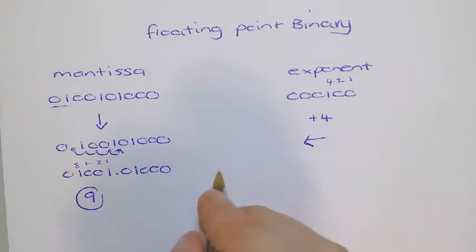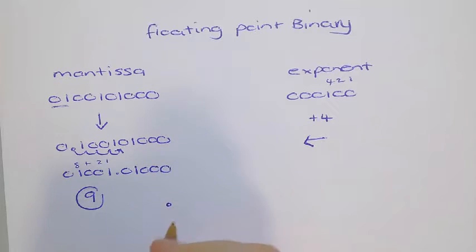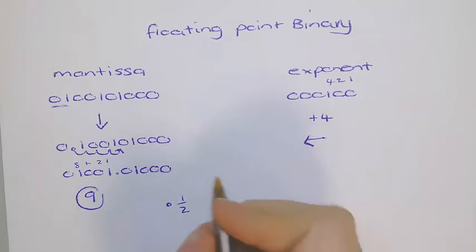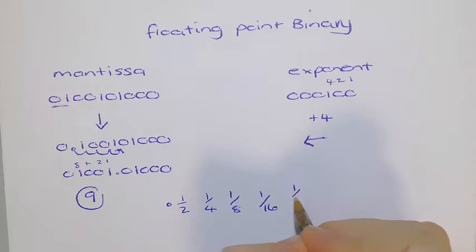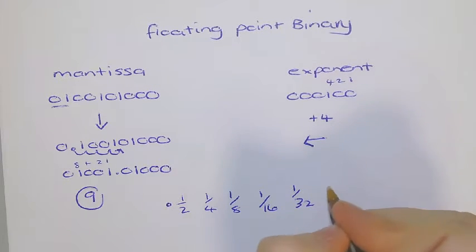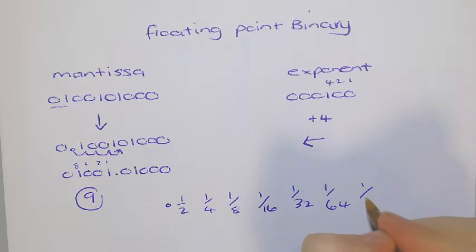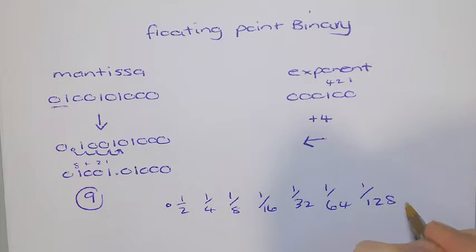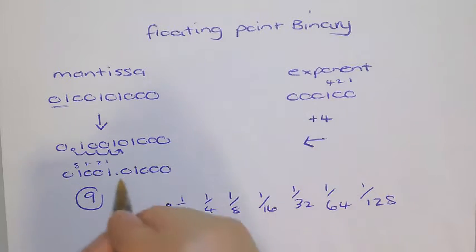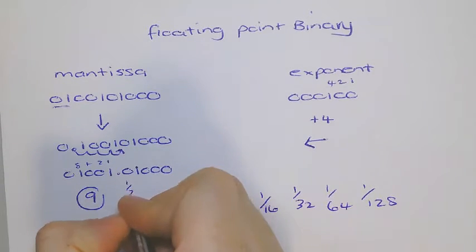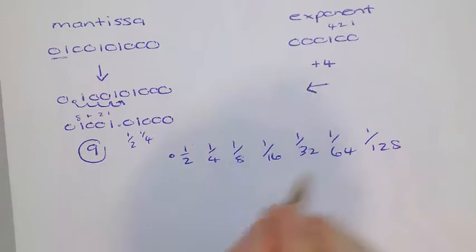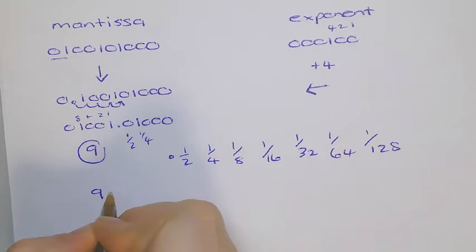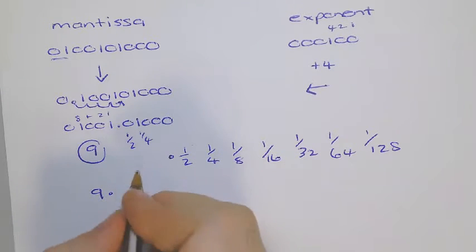So, if my point is here, any numbers after would be 1/2, then 1/4, then 1/8, then 1/16, 1/32, 1/64, 1/128, and so on. So, here, we've got nothing for a half, but we've got a value for a quarter. So, that number that we've made is 9.25.